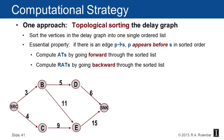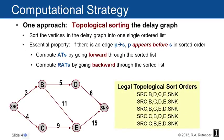A topological sort sorts the vertices in the delay graph into one single ordered list with the essential property that if there's an edge from node P to node S, P must appear before S in the sorted order. In the example graph — source, B, C, D, E, sink — source connects with weight 3 to B and 4 to C; B connects to D with 5 and E with 11; C connects to E with 9; D connects to sink with 6; E connects to sink with 15.